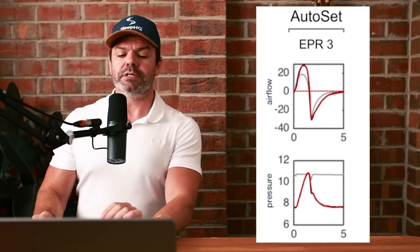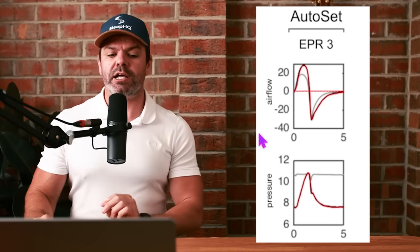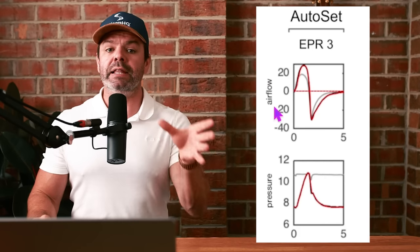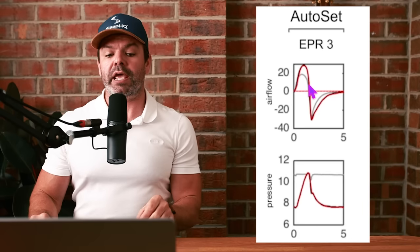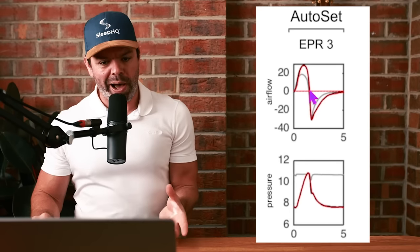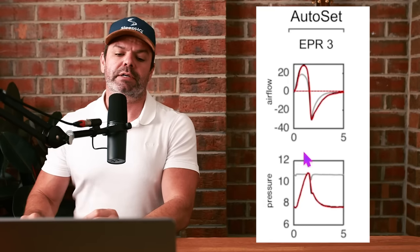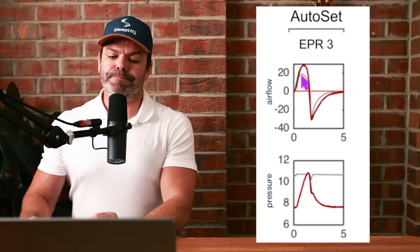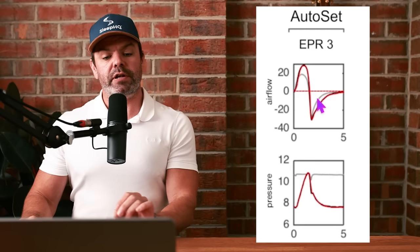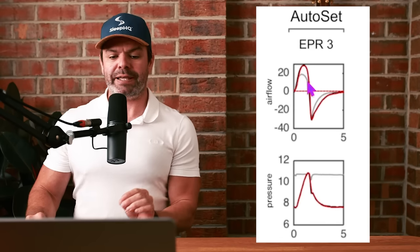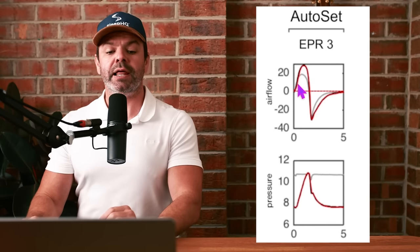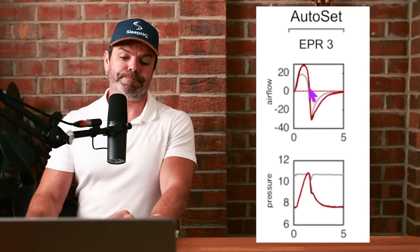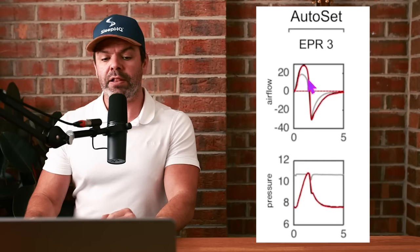To start, let's look at these two ResMed charts and the changes that take place when we turn on EPR, because this is what's causing the problems. There's two charts: we have airflow, think of this as inhalation air moving into your lungs and exhalation air moving out, liters per minute. And also mask pressure, the pressure inside the mask. We've got this gray line, this is with EPR turned off, and the red line is when we turn it on.